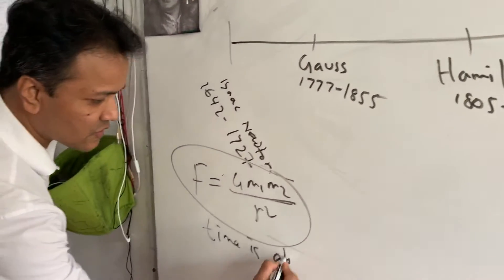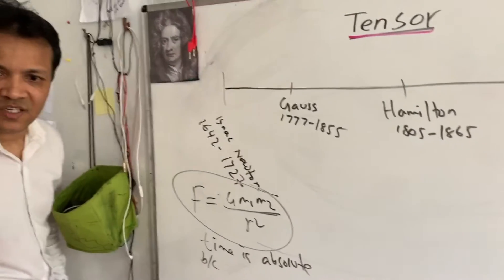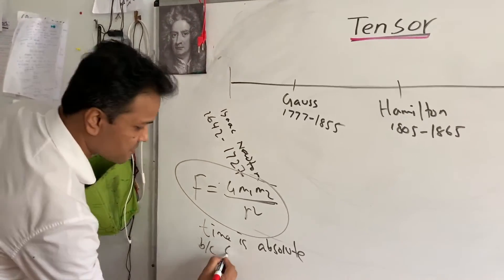time is absolute. Time is absolute because according to Sir Isaac Newton, it's space time flat.